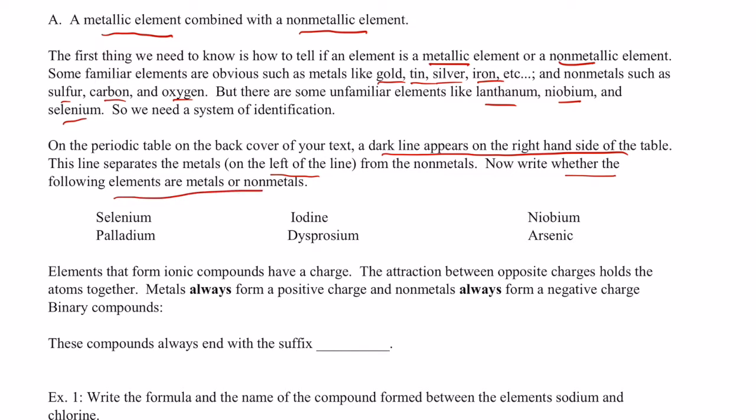So, that line separates the metals on the left side and the nonmetals, which are on the right side. Now, write whether the following elements are metals or nonmetals based upon their position on the periodic table. So go ahead and take a minute and do these six, just find them on the periodic table, decide if they're metals or nonmetals. Remember, if they're on the left, they're a metal, and if they're on the right, they're a nonmetal.